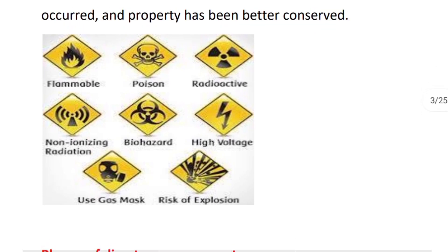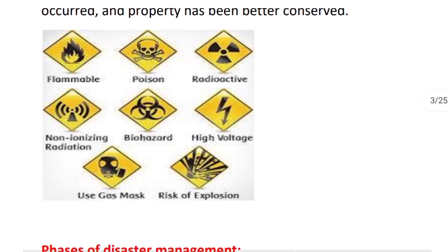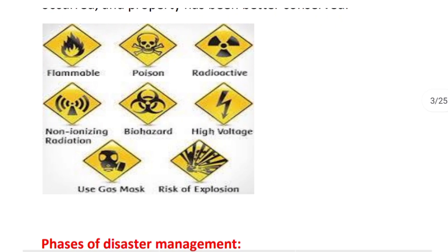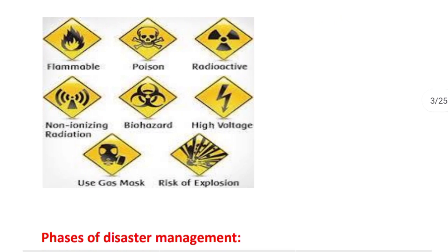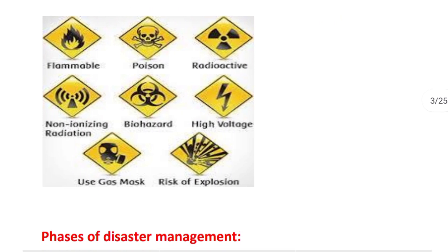There are some disaster hazard types we should know about: fire, poison, radioactive material, non-ionizing radiation, biohazard, high voltage, use of gas mask, and risk of explosion.